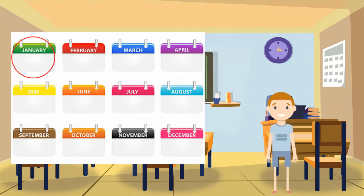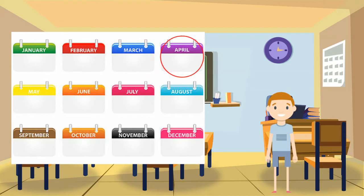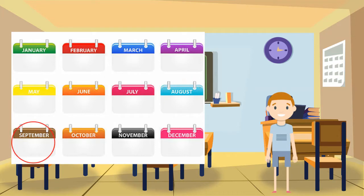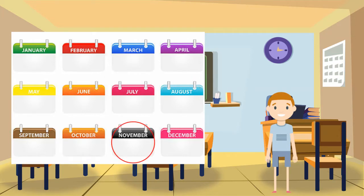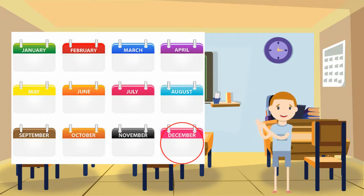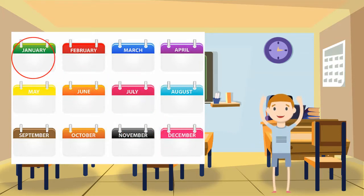January, February, March, April, May, June, July, August, September, October, November, December. After December, a new month begins. This new year starts over with the month of January.